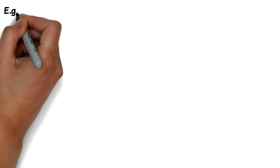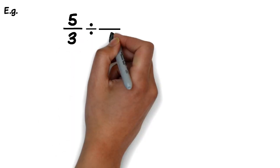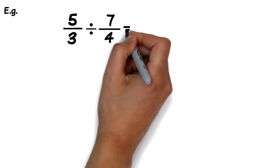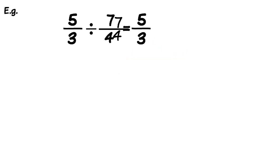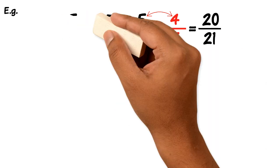Let's look at another example: 5 over 3 divided by 7 over 4. Using KFC, keep the first fraction the same, flip the second so it becomes 4 over 7, and change the sign to times. The new question becomes 5 over 3 times 4 over 7. Multiplying numerators: 5 times 4 is 20; denominators: 3 times 7 is 21. The new fraction becomes 20 over 21.